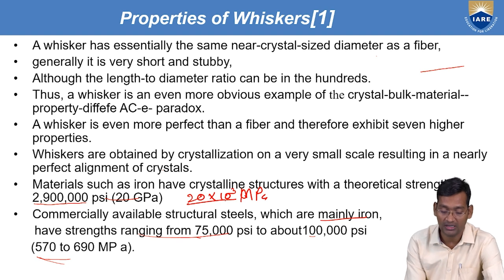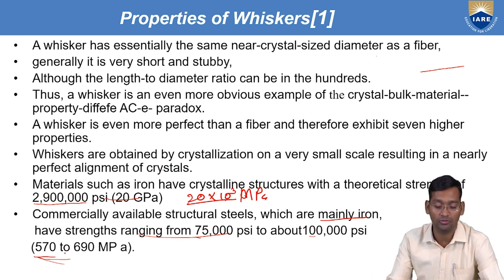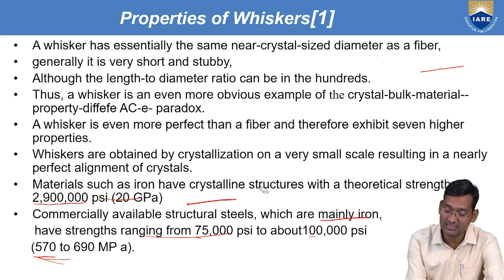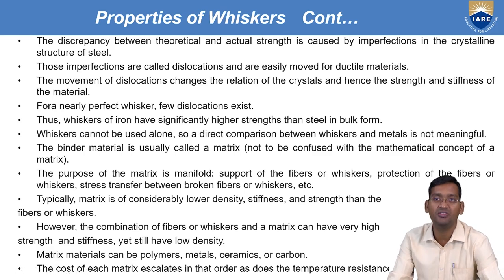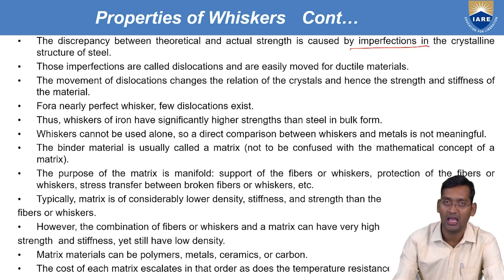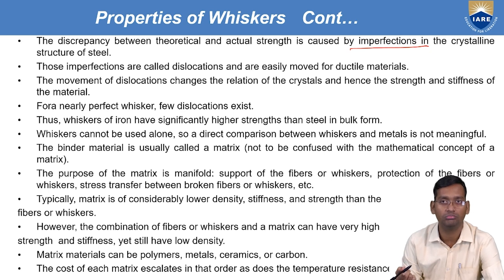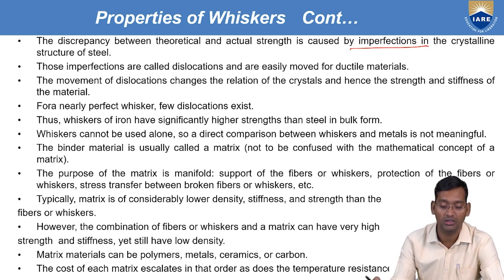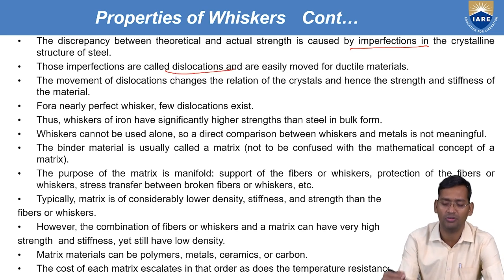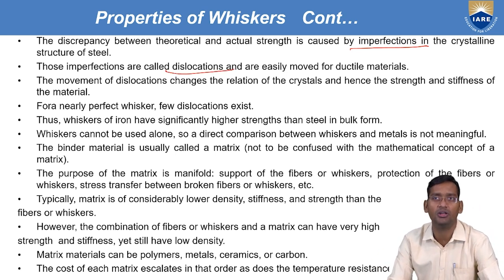The difference is huge: theoretical is 20,000 MPa versus actual 570–690 MPa. This discrepancy between theoretical and actual strength is caused by imperfection in the crystalline structure. Because of imperfection, it should be 20 GPa according to theory, but we are getting only 0.57 GPa. Those imperfections are called dislocations and are easily removed from ductile material.